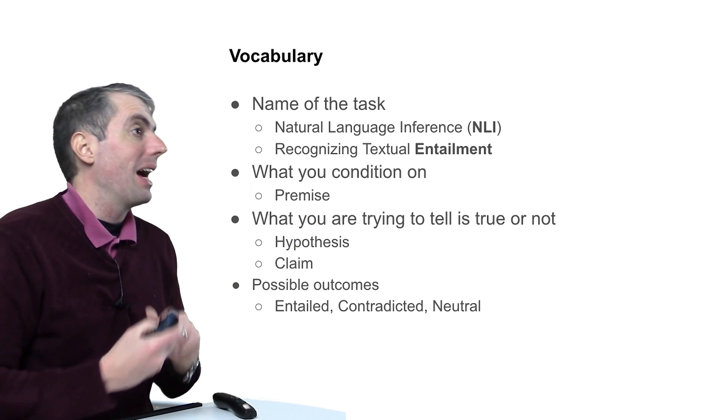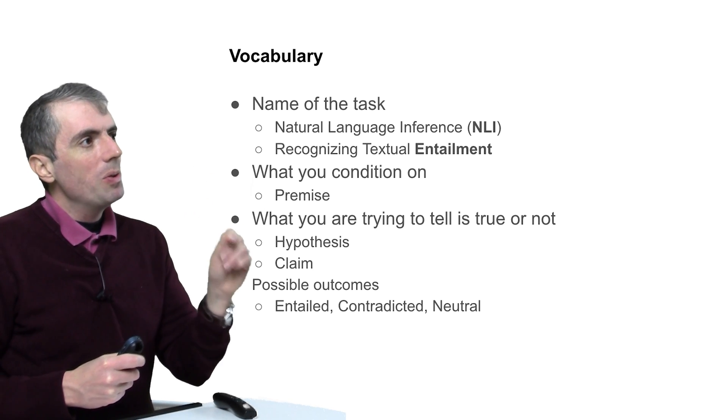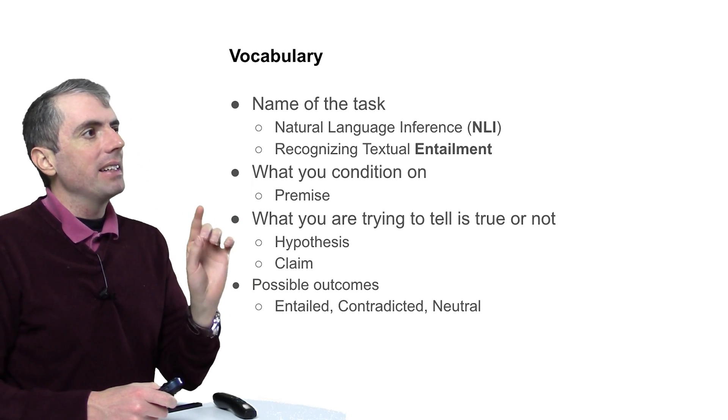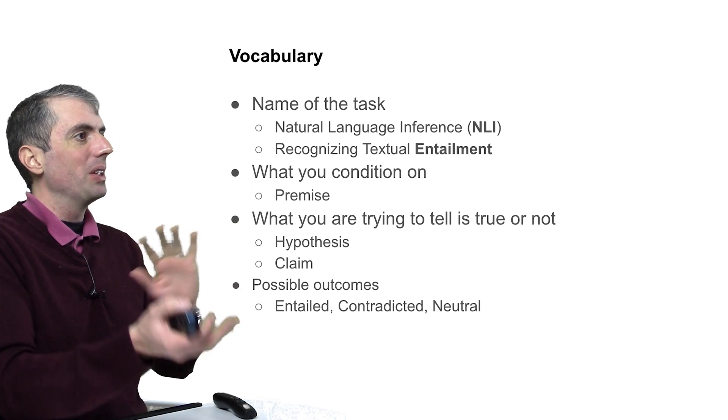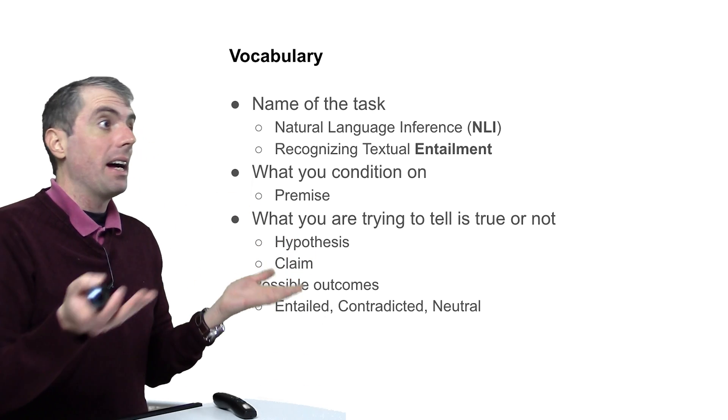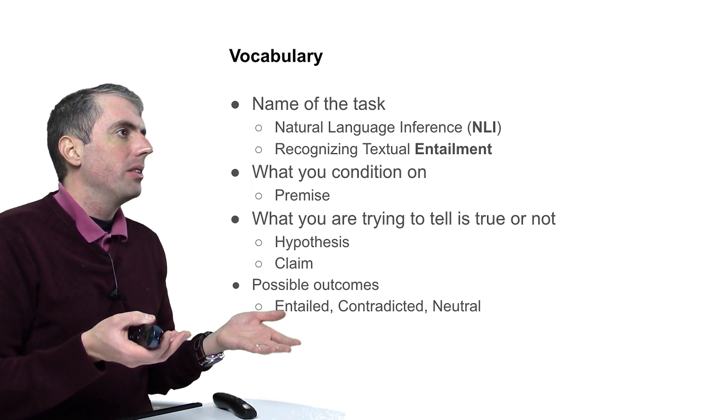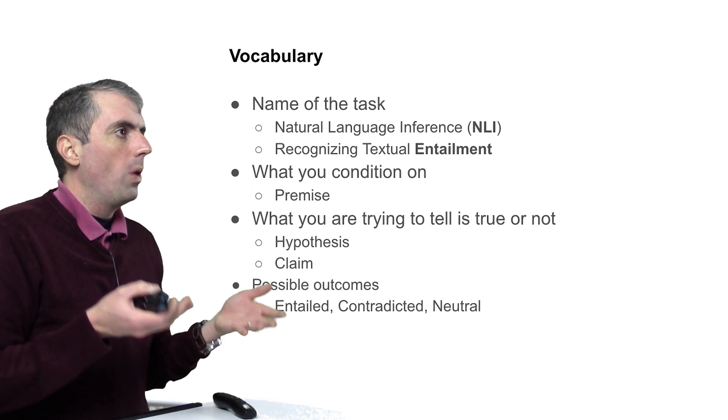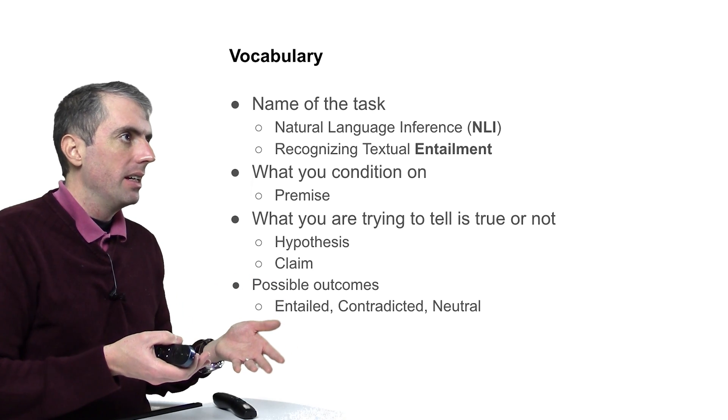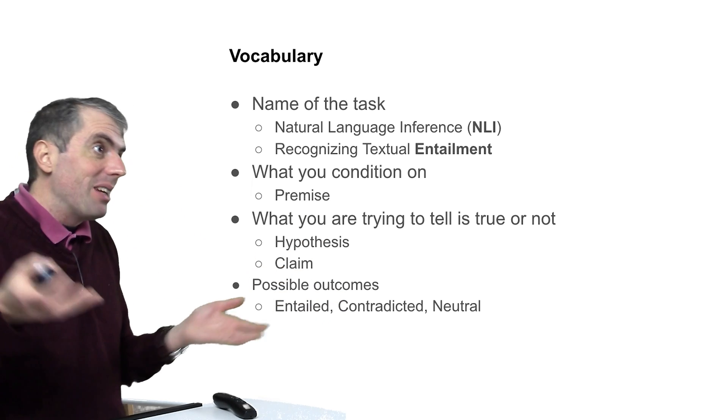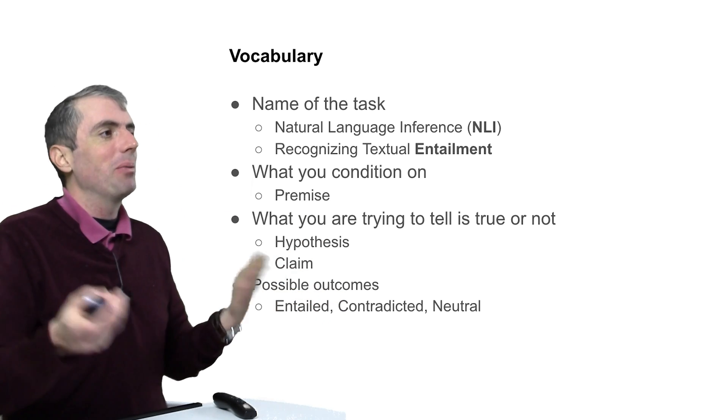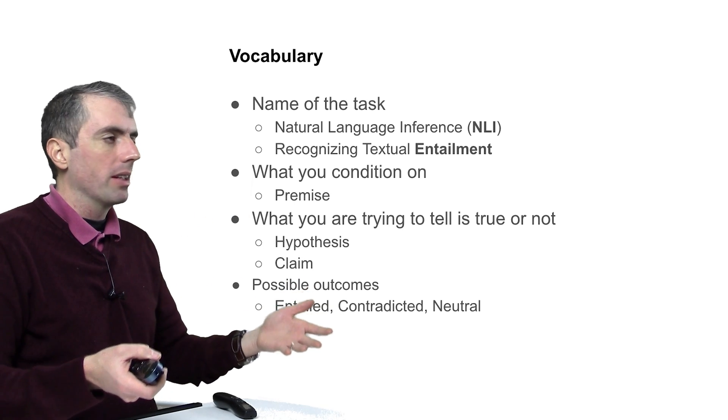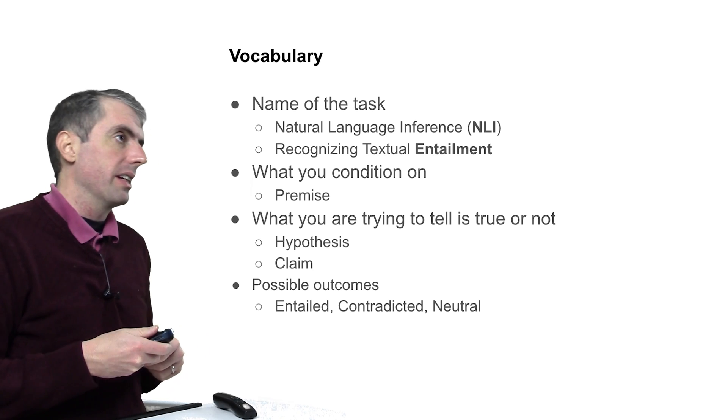Let's review some of the vocabulary before we move on. What you condition on is almost always called the premise, but the thing that you're trying to tell if it's contradicted or entailed is sometimes called a claim or a hypothesis. And I'm going to try to talk about the most interesting cases where the claim is either entailed or contradicted. But sometimes you just don't have enough information to make a decision one way or another. Thus, many of these datasets often have a neutral or not enough information class in addition to entailed or contradicted.